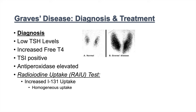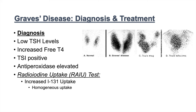On the RAI scan, a normal thyroid shows normal I-131 uptake. In Graves' disease, uptake is markedly increased and homogeneous, because the autoantibodies have access to the entire thyroid gland. This distinguishes Graves' disease from toxic multinodular goiter — which shows multiple hotspots — and toxic adenoma, which shows a single hotspot.